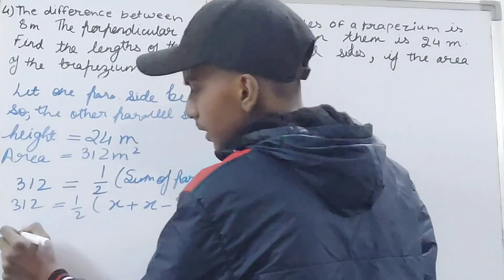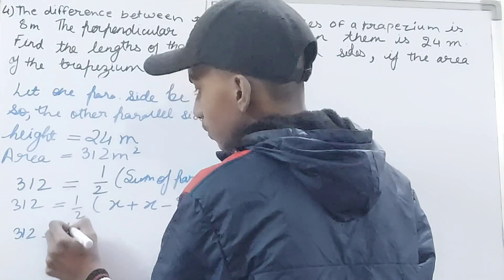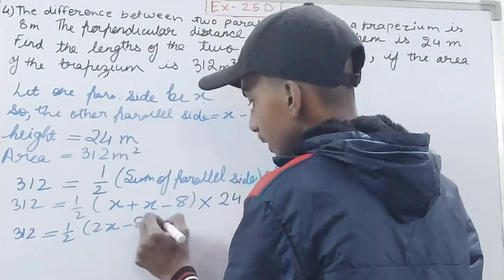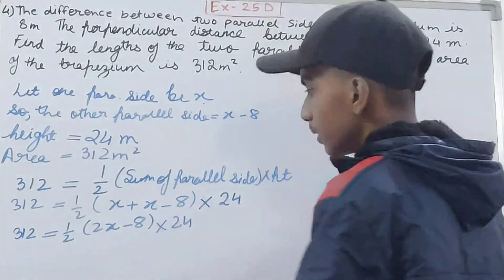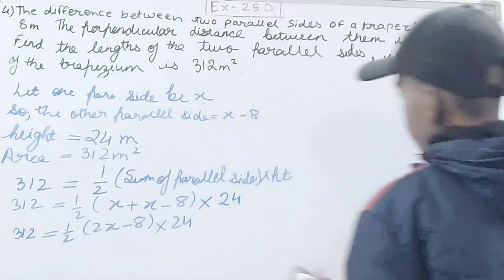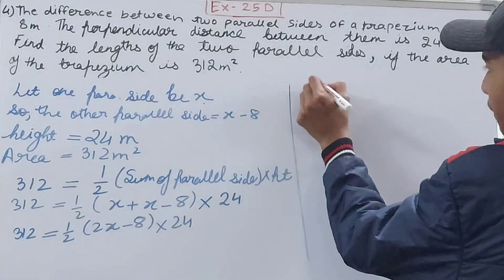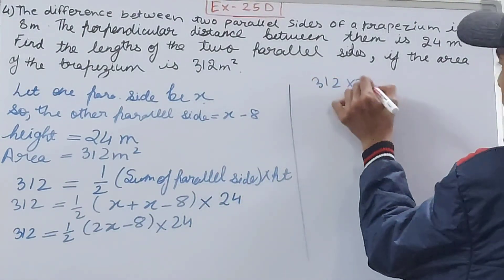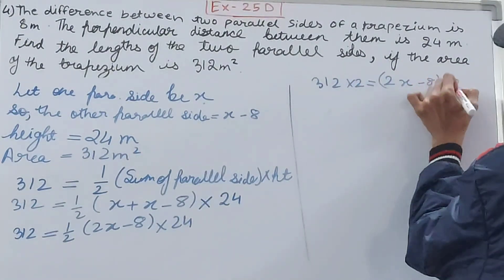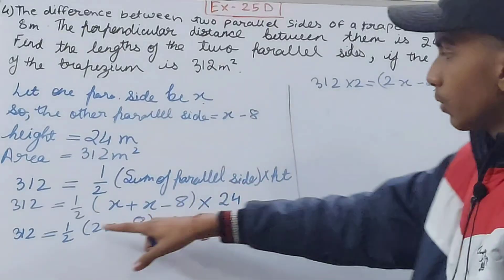So 312 equals 1/2 times (2X minus 8) times 24. Let's see, 312 times 2 equals (2X minus 8) times 24.